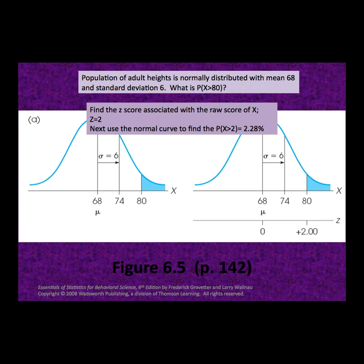Consider this example. A population of adult heights is normally distributed with a mean of 68 and a standard deviation of 6. What is the probability of having a height greater than 80? We sketch this distribution marking the mean of 68 on the curve. Our score of 80 falls exactly two standard deviations above the mean, corresponding to a z-score of positive 2, which has 2.28% of the data above it. Therefore, the probability that x is greater than 80 is 2.28% of the data.